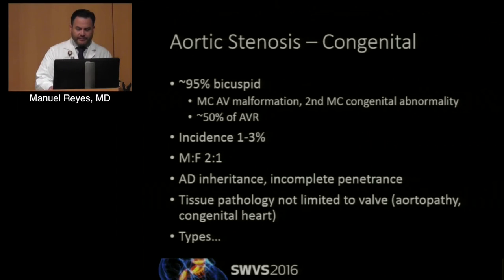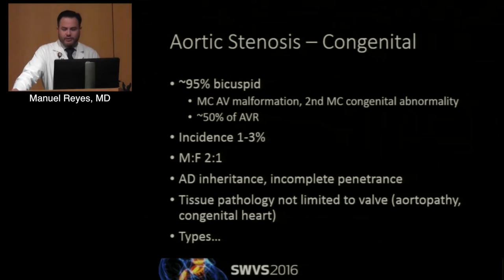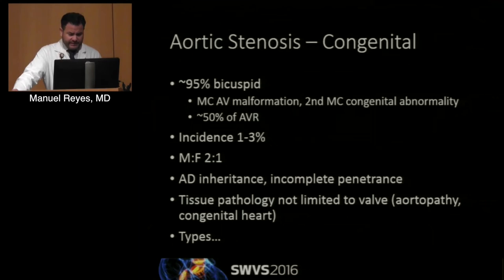Let's focus on aortic stenosis for the moment. For congenital aortic valve, the majority of the time the issues are related to a bicuspid valve — 95% of the time. But you will also see the very rare unicuspid and quadricuspid congenital defects. Bicuspid is the most common aortic valve malformation and the second most common congenital abnormality, occupying about 50% of aortic valves that are replaced. Incidence is one to three percent, with a little male predominance.